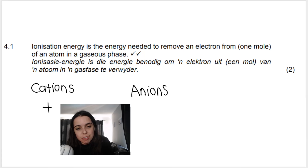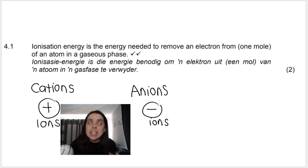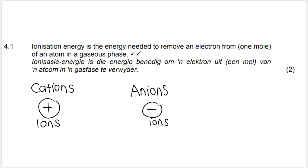Cations are positive ions and anions are negative ions. Think of anions — anions sounds like onion, onions make you cry when you chop them. Another important point: a cation is formed when a positive ion is formed, and a positive ion is formed when electrons are lost.